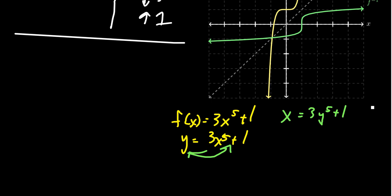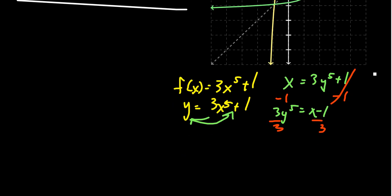To solve for y, subtract one from both sides so the one cancels on the right — we get 3y to the fifth equals x minus one. Then perform the next inverse operation, which is division by three. So we end up with y to the fifth equals x minus one over three, or equivalently one-third x minus one-third. Either form is perfectly fine; I'm going to stick with the first one.